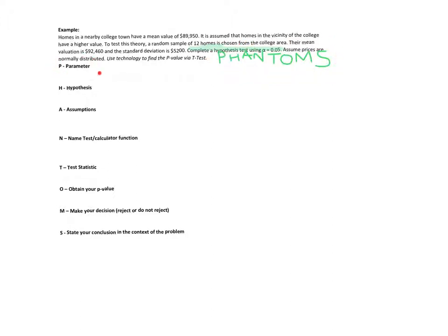So let's do parameter. What we're testing is we see this mean value. This is definitely not a proportion. It's definitely a mean. So the parameter is mu. And our hypothesis, we need our null hypothesis and we need an alternative. We have to include the parameter. So we're going to write mu. And remember, our null hypothesis has the equal sign. And we're comparing it, the homes, to this value given. So $89,950.